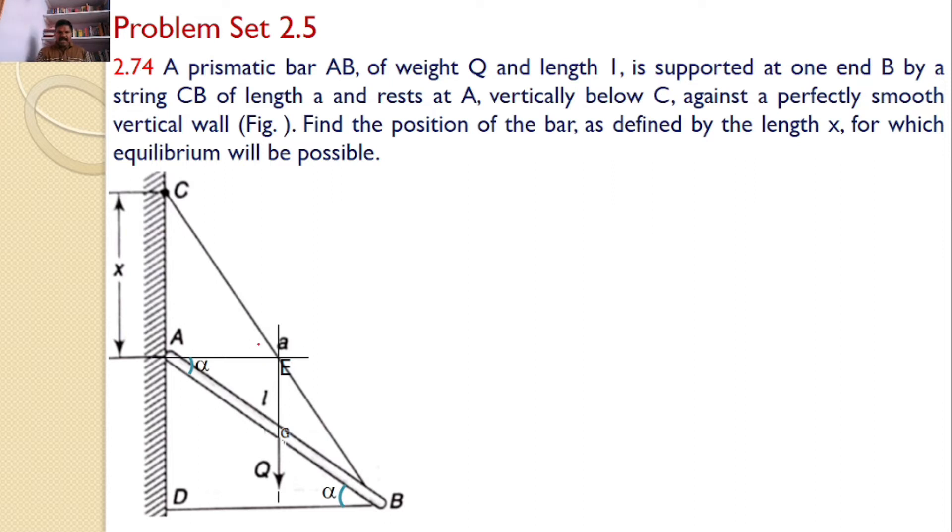So for that, first I am doing a small construction. I am drawing a line perpendicular to the wall and passing through point A. And this is the weight Q acting like this. This is another line passing through the center of gravity like this. These two are intersecting at this point. Now our interest is to find the value of x.